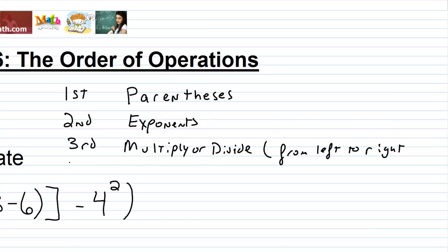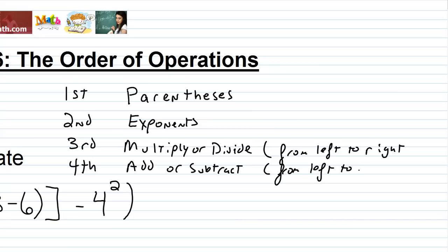Fourth, for the final step, the lowest priority is to add or subtract, and again this is from left to right. If you see subtraction to the left of addition, you subtract first. If you see addition to the left of subtraction, you add first.